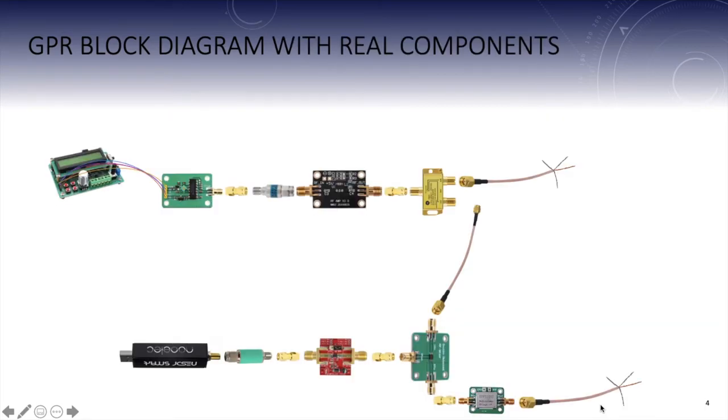Here is a diagram that I have created using images of each exact component I will be using to create a ground penetrating radar device. Currently, I have about half the components and the rest is waiting to be received.